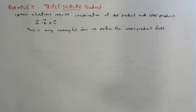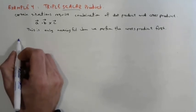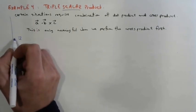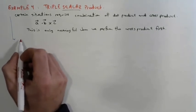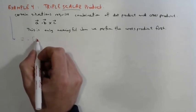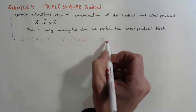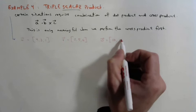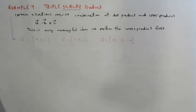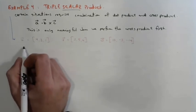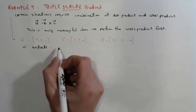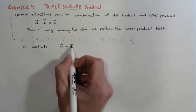Example 4 gives us three vectors: U = (4, 3, 1), V = (2, 5, 6), and W = (10, -3, -14). We are asked to evaluate U cross V, dot W.